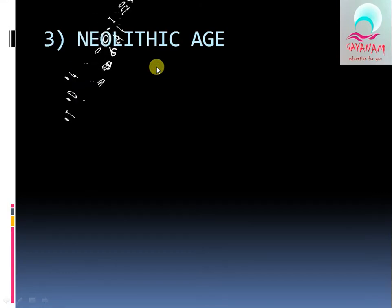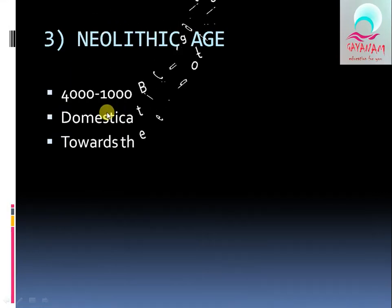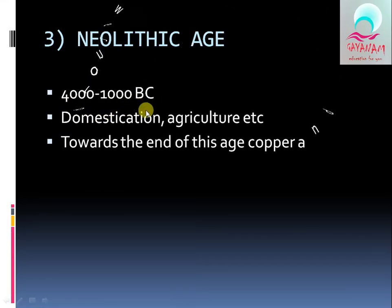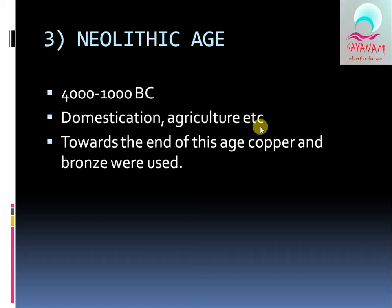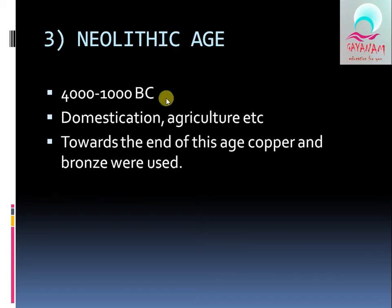Next is the Neolithic Age. The Neolithic Age spans from 4,000 to 1,000 BC. The most important features of this period are domestication and agriculture. Towards the end of this age, copper and bronze were used.